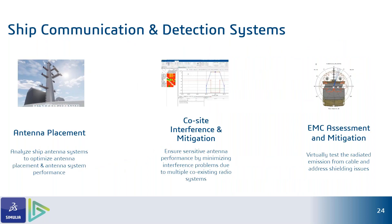Key antenna applications include: antenna placement analysis, ensuring signal strength is strong at all points without inefficiencies; co-site interference and mitigation, ensuring low interference between multiple antenna signals and high EMC compatibility; and radiated emissions shielding studies, verifying that radiated emissions from cables do not affect cabling performance or EM performance — with shielding studies used to mitigate these phenomena as much as possible.